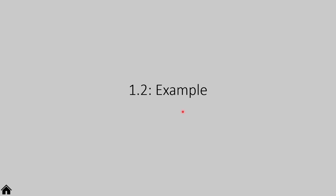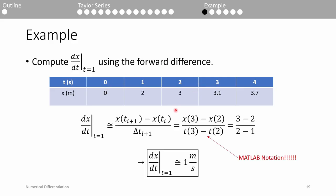We've done quite a bit of math, so let's make things more concrete with some examples. Here we have a 5-element equally spaced dataset. Suppose we want to compute the forward difference at t equals 1. For the forward difference, we need the point in front of the current point, so we do x of 3 minus x of 2 all over t of 3 minus t of 2. Note: x of 3 means the third element in the x vector, which is 3 — not the x value corresponding to t equals 3, which would be 3.1. Likewise, t of 3 means the third element in the t vector, which is 2. When we plug in the numbers, we get 3 minus 2 over 2 minus 1, or 1 meter per second. The O of h term is just an abstraction representing the truncation error — when actually using these formulas, we ignore the big O notation.